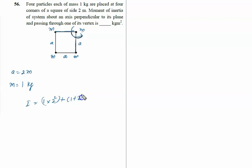Then for this particle, m r squared. Mass is 1. Distance - this is a, this is a, so a root 2, means 2 root 2 squared.